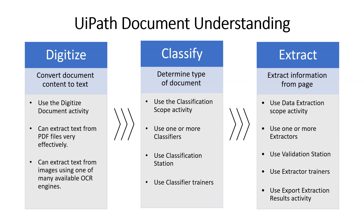So these are the main three activities. You digitize — meaning you read the document. You classify it — meaning you determine what type of document it is. Once you've done that, you know exactly what information you need to extract from the document. And you do that in the extract phase.